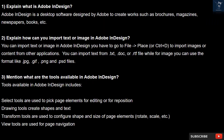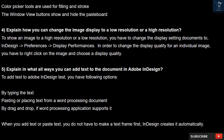Question 3. Mention what are the tools available in Adobe InDesign? Tools available in Adobe InDesign include: Select tools, used to pick page elements for editing or repositioning; Drawing tools, which create shapes and text; Transform tools, used to configure shape and size of page elements, rotate, scale, etc.; View tools, used for page navigation; Color picker tools, used for filling and stroke; and Window view buttons, which show and hide the pasteboard.